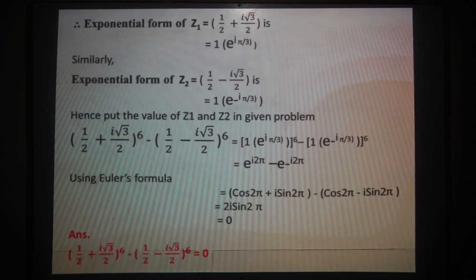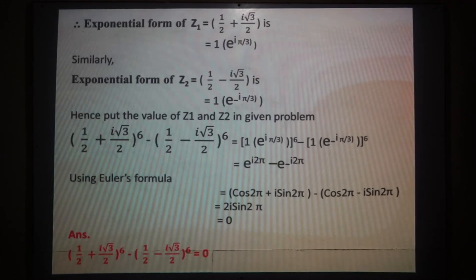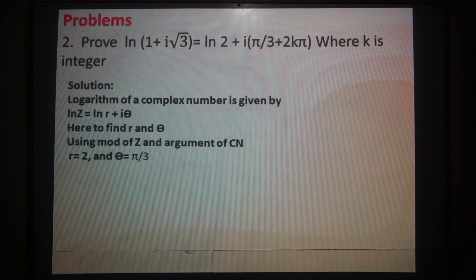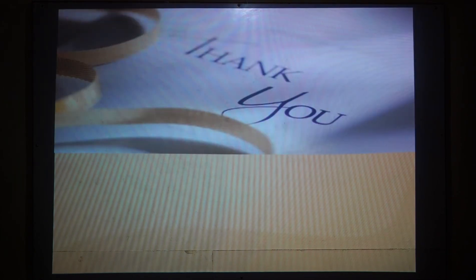For homework: simplify (1 + i)⁸ + (1 − i)⁸ — this involves powers of complex numbers, and the answer is 0. Another homework problem: find ln(1 + i√3). First find r = √(1 + 3) = 2, so ln 2, and θ = π/3. In this video lecture we studied De Moivre's theorem, how to find powers of complex numbers, roots of complex numbers, and the logarithm of complex numbers. Thank you.